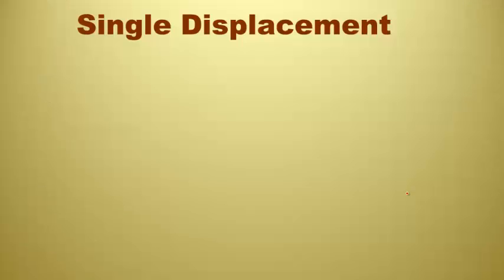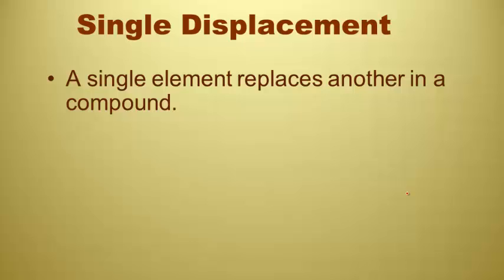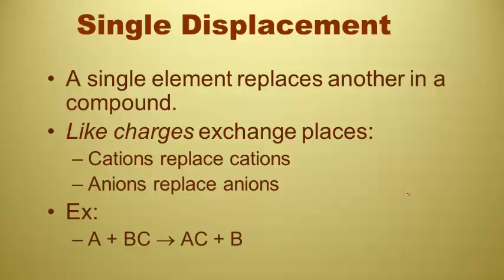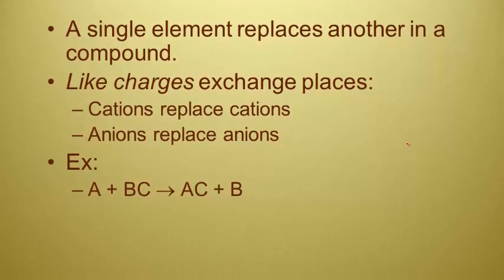Two more kinds of reactions. Single displacement is one of them. Single displacement, an element replaces another element in a compound. The rule for this is that like charges always exchange places. So you're going to have to look at the periodic table and see what charge the element usually becomes and then look at which of the two things in the compound has a similar charge. So cations are always going to replace cations and anions are always going to replace anions. My example here, my simple example, element A and compound BC form compound AC and element B. Notice guys that A and B are expected to both be cations, positive ions. I can tell that because B was listed first and they wound up switching places.